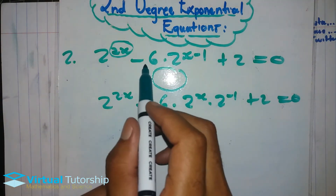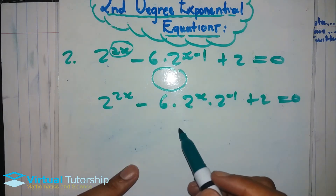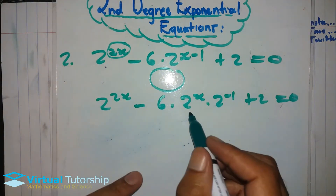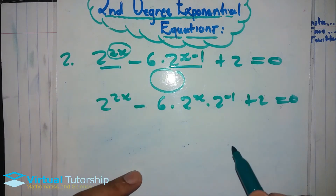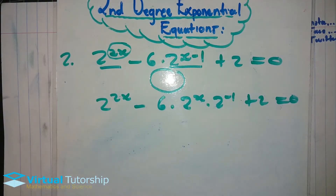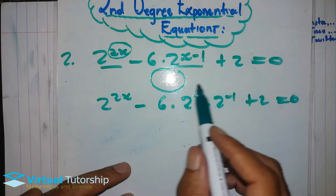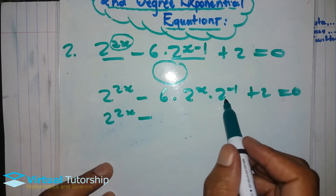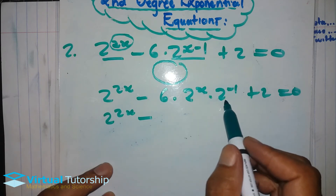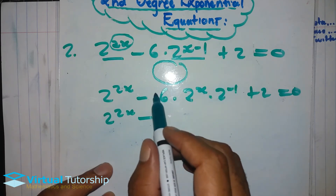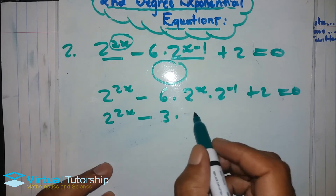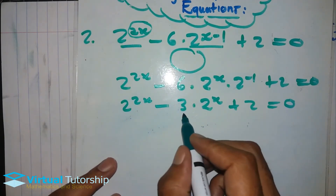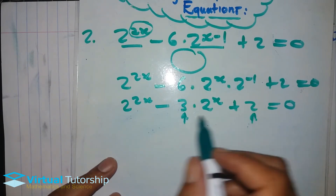So let's go ahead and break — rewrite this one as prime base to exponent — as prime base power. This power has a base of 2, and then now multiplied — 6 becomes 3 times 2 — so it's: 2 exponent x, plus 2, equal to zero. Identifying the B value and C value.